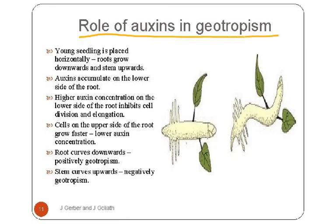Young seedlings placed horizontally: roots grow downwards and stem upwards. Auxins accumulate on the lower side of the root. Higher auxin concentration on the lower side inhibits cell division and elongation. Cells on the upper side of the root grow faster due to lower auxin concentration. Roots curve downwards — positive geotropism. Stem curves upwards — negatively geotropic.